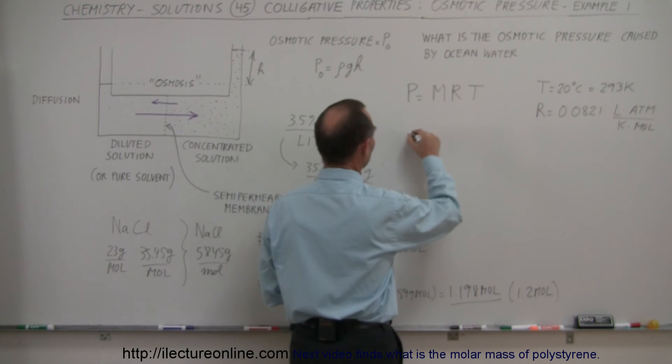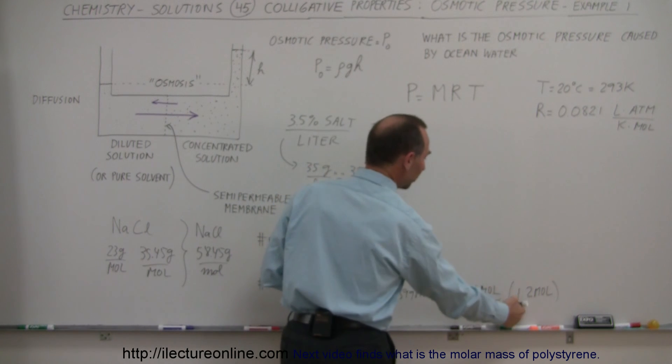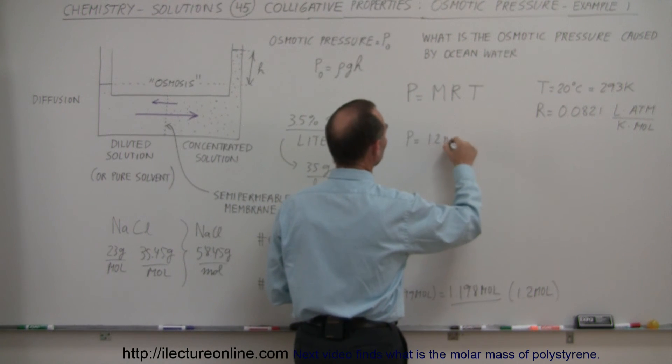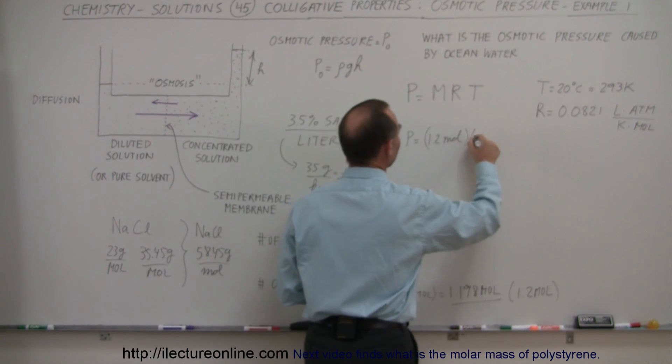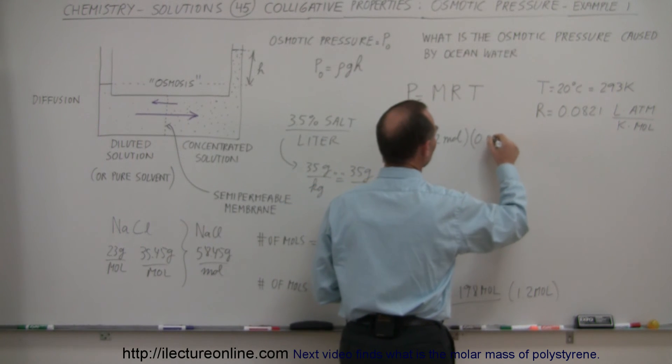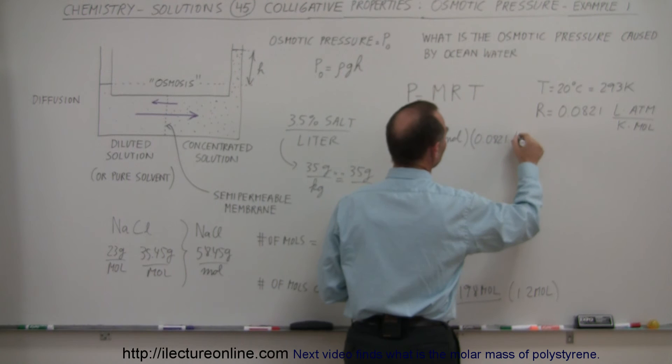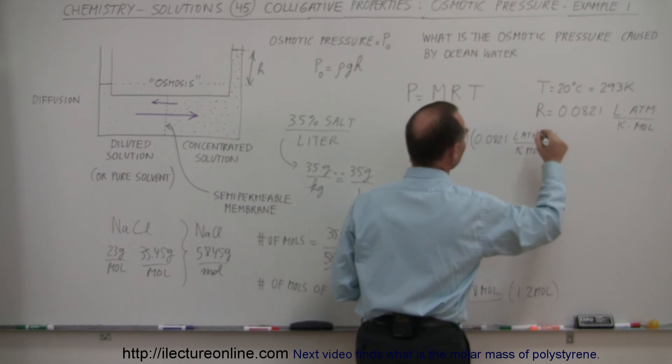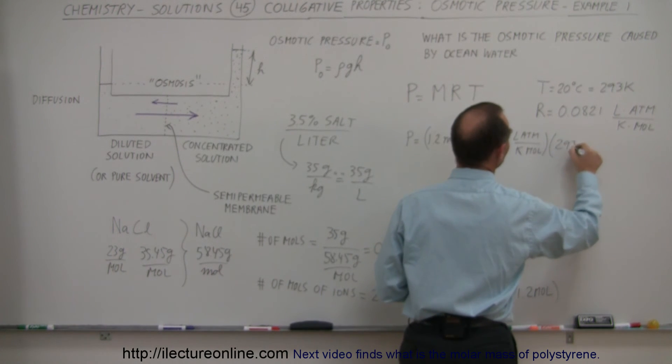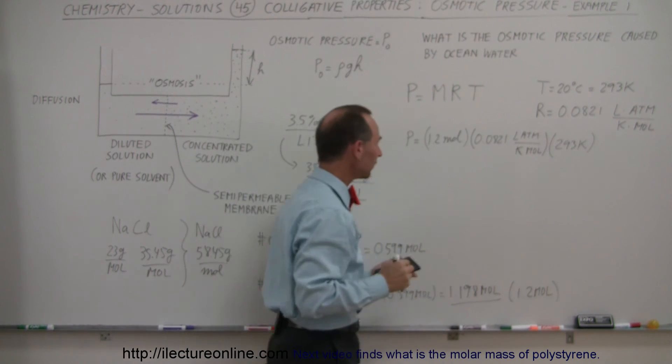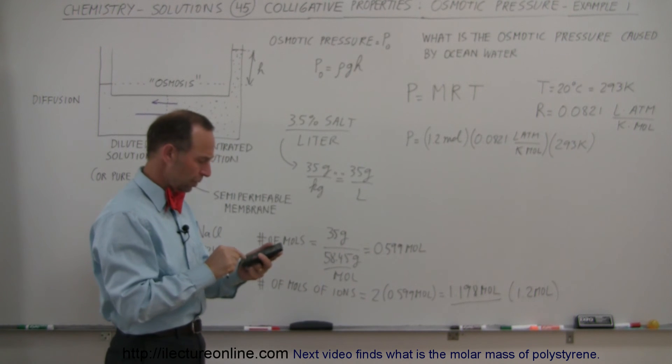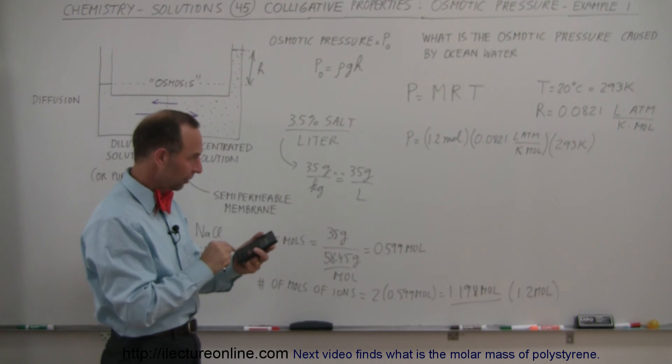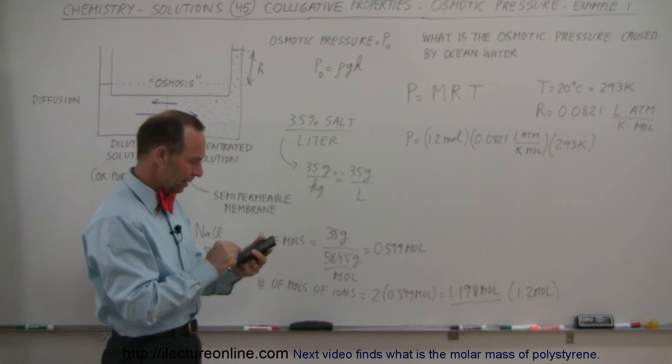Now we can go ahead and figure out the osmotic pressure. So P is equal to the molarity of 1.2 moles, times the gas constant, 0.0821 liter atmospheres, divided by Kelvin and moles. And I multiply it times the temperature of 293 Kelvin. So 1.2 times 0.0821 times 293 equals,